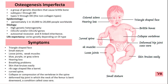Osteogenesis Imperfecta is classified into several types, ranging from mild to severe. Type 1 is the most common and mild form; individuals typically have a normal life expectancy with frequent fractures during childhood and some bone deformity. Type 2 is the most severe form, often resulting in stillbirth or death shortly after birth due to severe bone deformity and respiratory disease. Type 3 is a severe form with progressive deformity and frequent fractures leading to physical disability, and Type 4 is a moderate form with symptoms similar to Type 1 but often with more bone deformities.